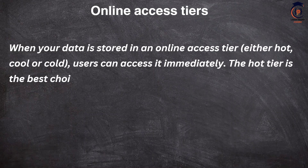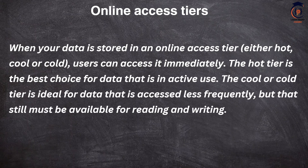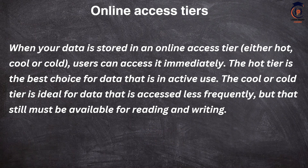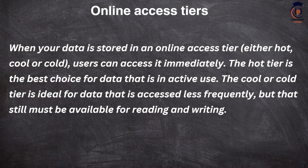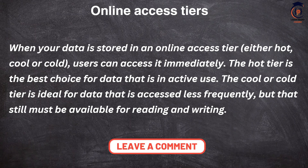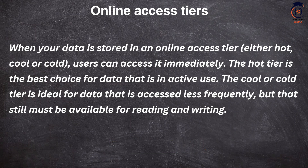Before we get into the deeper details, let's first understand the online access tiers. There are four tiers: hot, cool, cold, and archive. When your data is stored in an online access tier like hot, cool, or cold, users can access it immediately. The hot tier is the default and is the best choice for actively used data. The cool and cold tiers are ideal for data accessed less frequently but that must still be available for reading and writing. Archive is something you cannot access immediately.